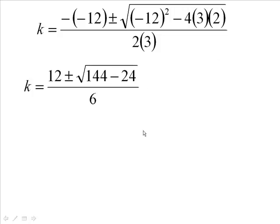Let's just look at the values slowly here. The opposite of -12 is +12. Now we have -12 times -12 is 144, it's plus 144. We have 4 times 3 is 12, 12 times 2 is 24, and it's a minus. And we have 2 times 3 is 6.